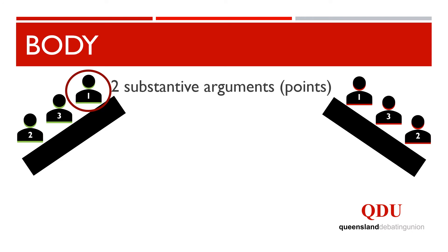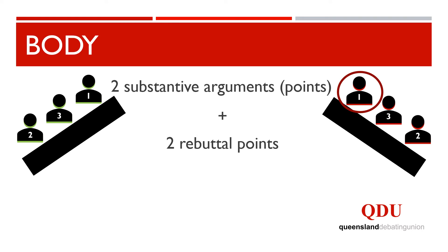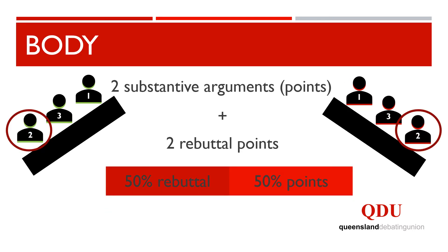As the first negative speaker, you will generally have two rebuttal points which respond to the arguments made by the first affirmative speaker. After addressing those points, you will present the two most important arguments on your side of the debate. Although the first negative speaker does present rebuttal, they should aim to spend most of their time on substantive arguments and less on rebuttal. Second speakers also have two rebuttal points and two substantive arguments in their speech. At this point in the debate, you should aim to spend about 50% of your speech on rebuttal and 50% on new arguments. However, this is just a goal to work towards, and speakers in grades five to nine will usually spend closer to 30% of their speech on rebuttal.